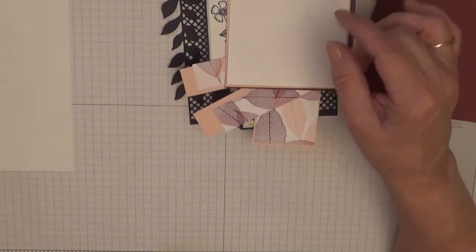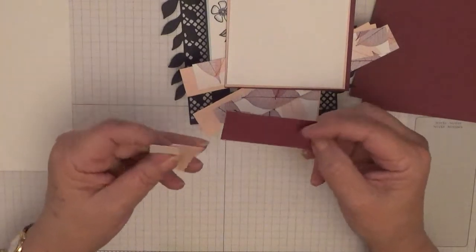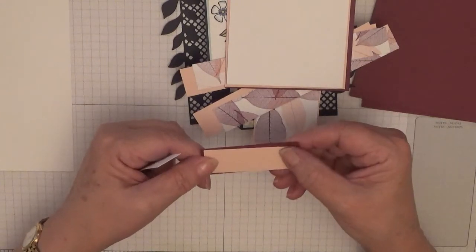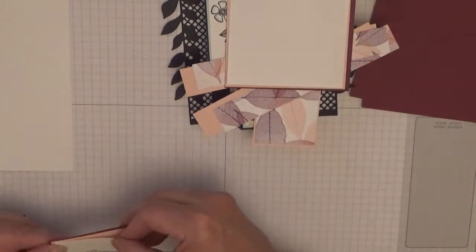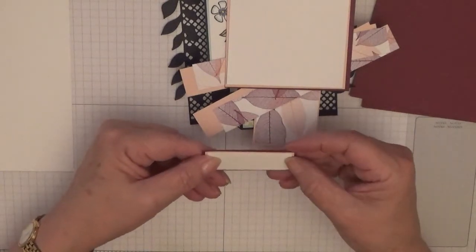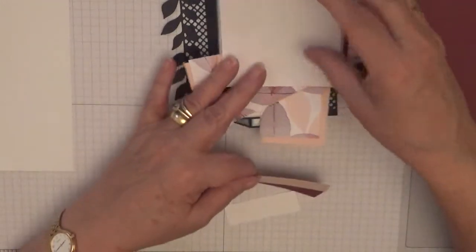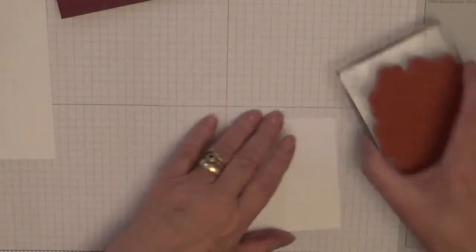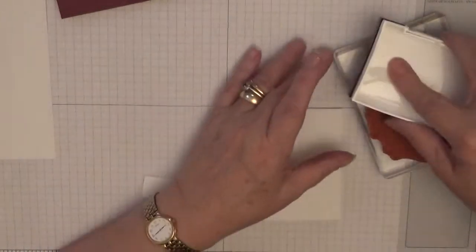For the sentiment you will need a piece two and a half inches by an inch in Rich Raspberry, two and three eighths by seven eighths in the Petal Pink, and two and a quarter by three quarters in the white. We need to stamp before we do anything else to let it dry. I'm using Tuxedo Black ink.